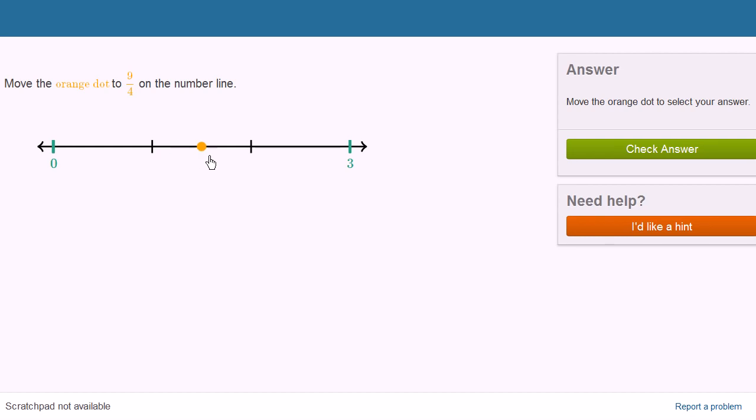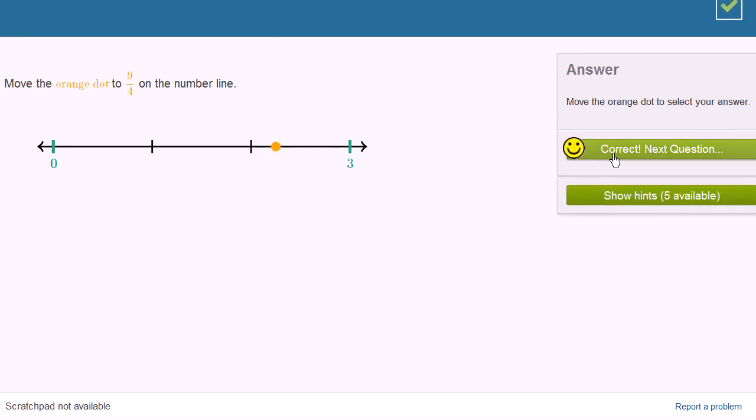5 fourths, 6 fourths, 7 fourths, 8 fourths, which is equal to two wholes. 8 divided by 4 is 2. And then we go from 8 fourths to 9 fourths. Either way, we get to the exact same point on the number line. Let's do a few more of these.